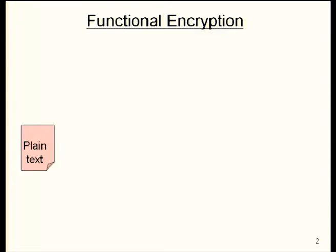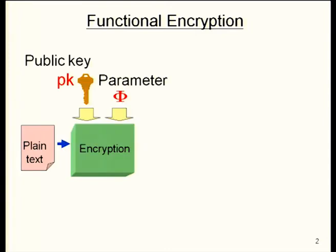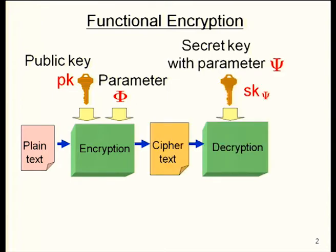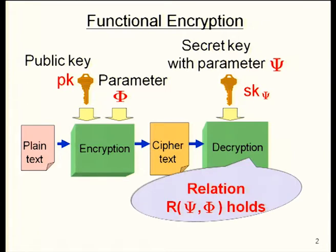I will introduce the notion of functional encryption. In this encryption system, the ciphertext has a parameter — denoted phi in this slide. Also, the secret key has another parameter, psi. A relation R between these parameters is predetermined, and if that relation holds, then the decryption succeeds.